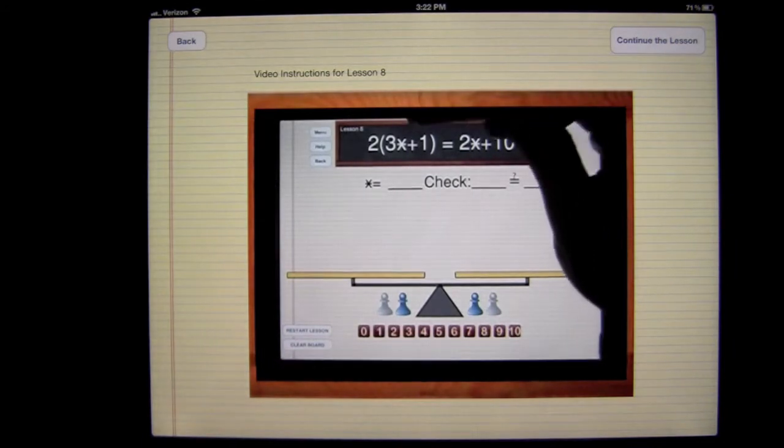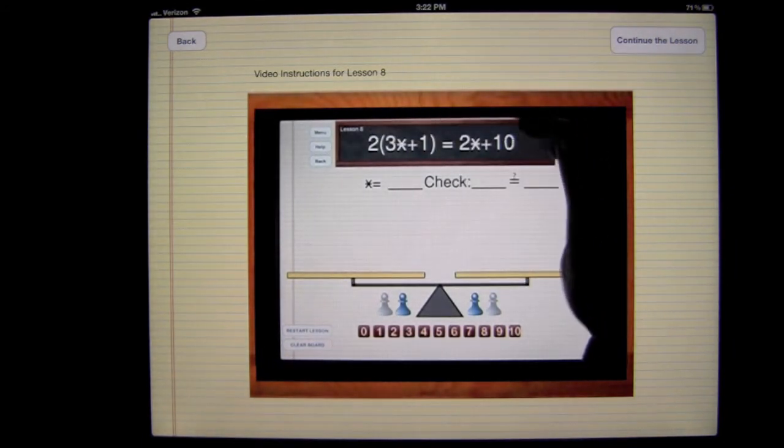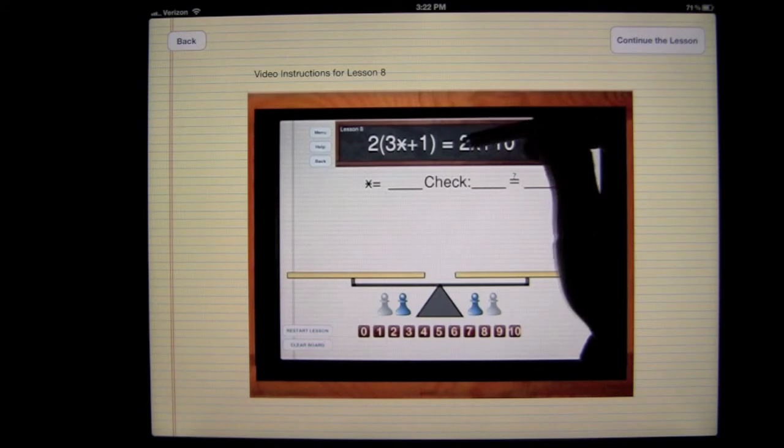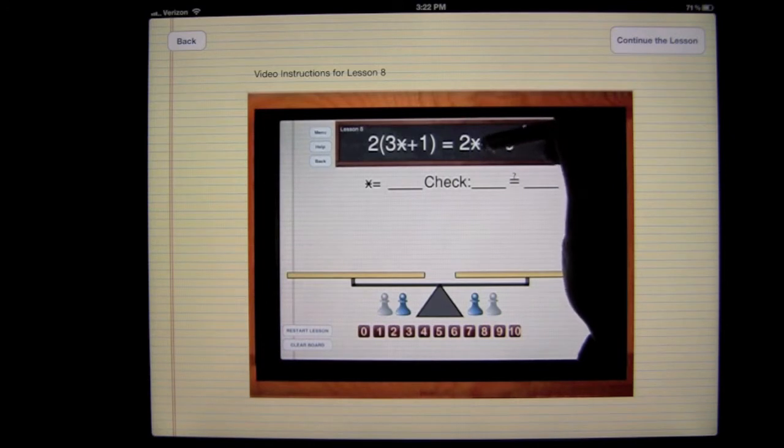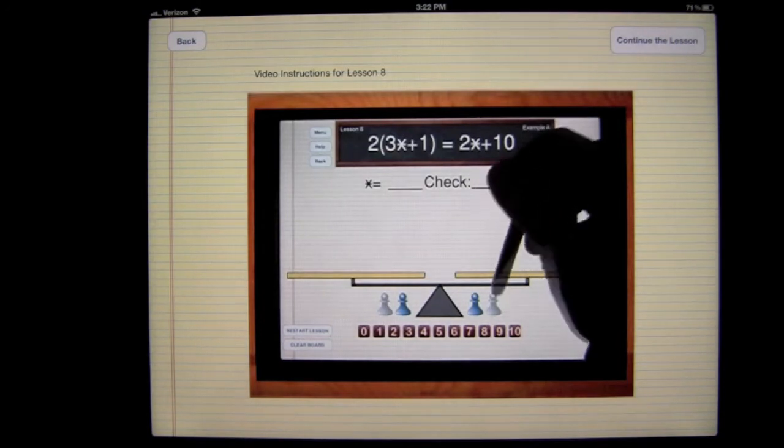Let's look at lesson number 8. This is the first lesson of level 2. We notice that we have a new symbol here. The symbol is that of a star. It's an X with a bar through it. Later on, we will see why we write it that way. For now, all we need to know is that star is the name of the white pawn.